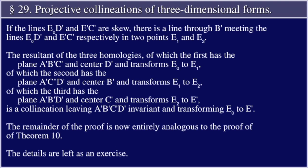is a collineation leaving A prime, B prime, C prime, D prime invariant and transforming E0 into E prime. The remainder of the proof is now entirely analogous to the proof of Theorem 10. The details are left as an exercise. Corollary: There exist projective collineations which will effect any one of the possible 120 permutations of the vertices of a complete five-point in space. Assumptions A and E.